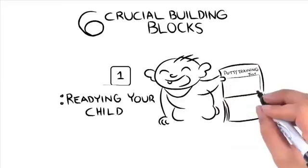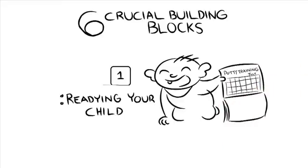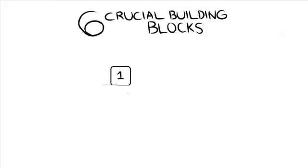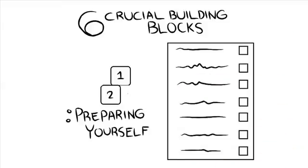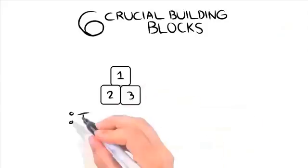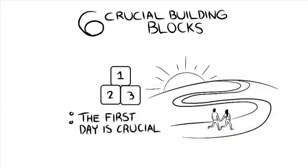Building block number one deals with readying your child for potty training. Even if they currently show no interest, I'm going to give you some of my all-time best tips that'll have your child counting down the days. Building block number two shows exactly everything you need to prepare for well in advance. Many parents move forward completely unprepared. After you read this chapter, you'll be ready for everything potty training throws at you. Building block number three discusses how the first day is the most crucial and sets the tone of the following two days to come. I take you by the hand every step of the way.